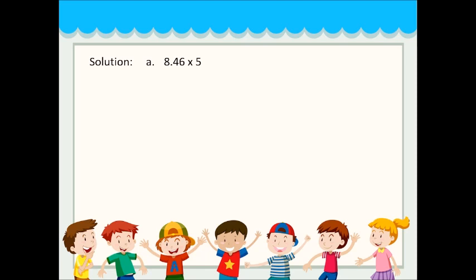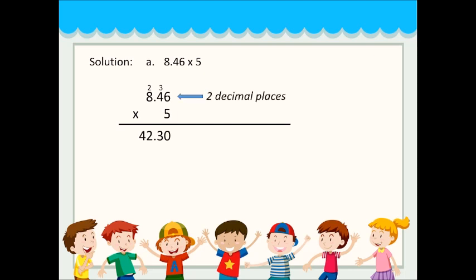Let's do letter A: 8.46 times 5. The answer is 42.30. How do we get that? First, 8.46 has 2 decimal places, while 5 has 0 decimal places. So our total decimal places are 2. Therefore, we move the decimal point 2 places in the answer.